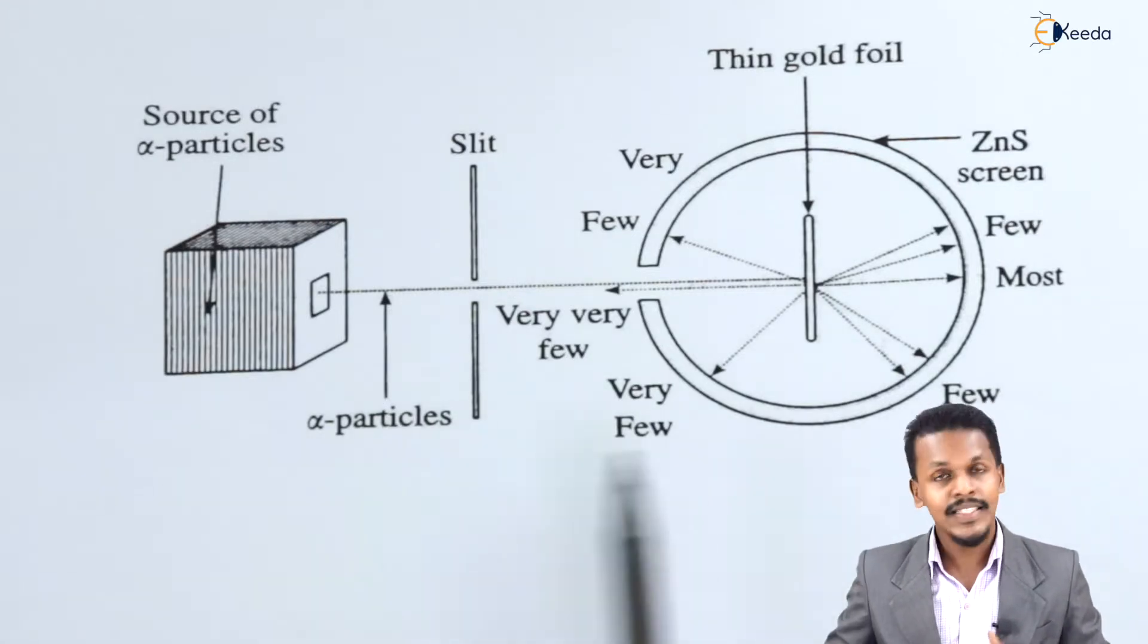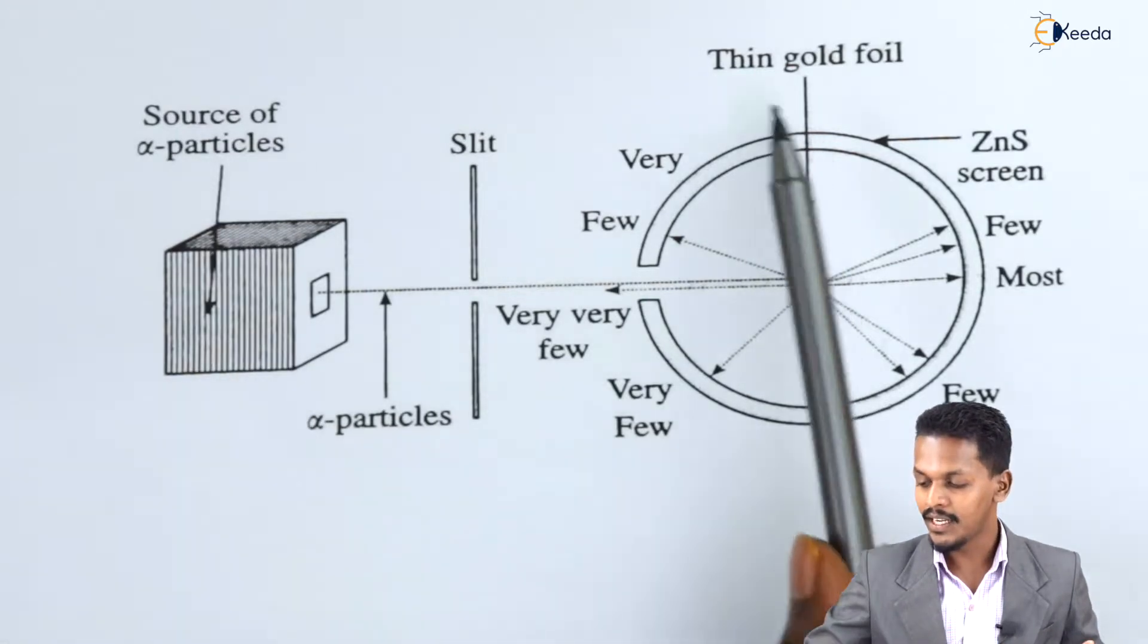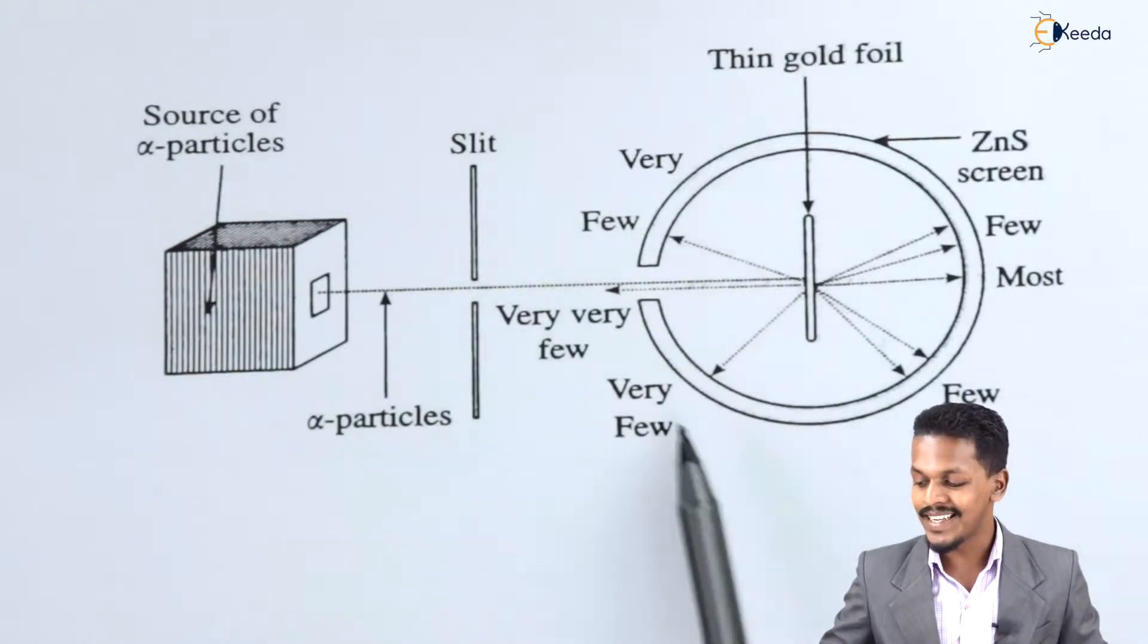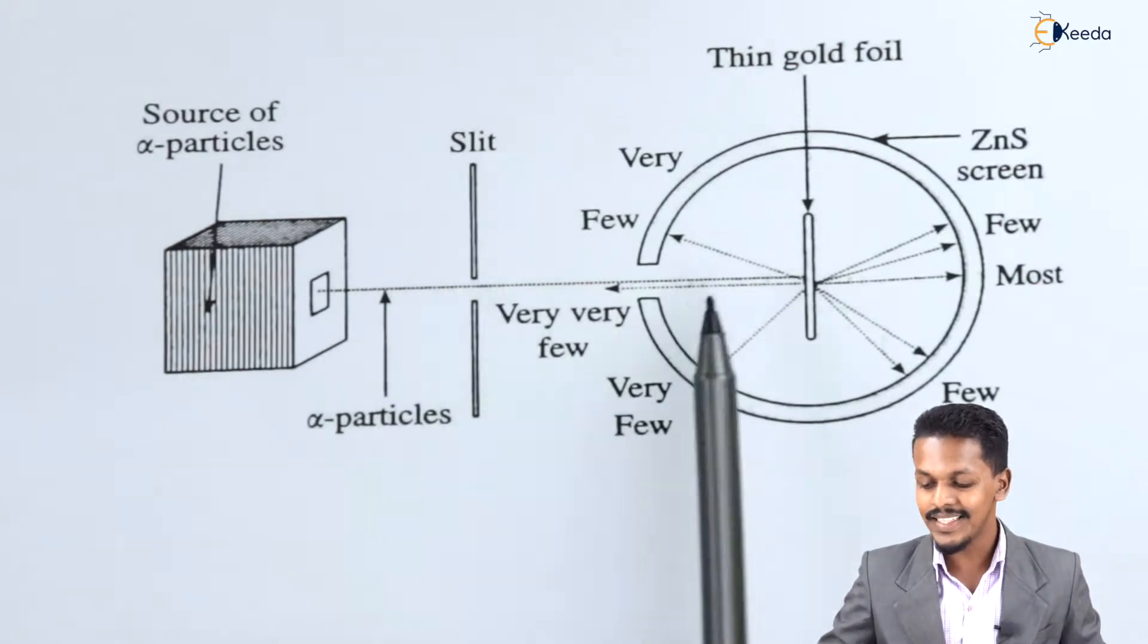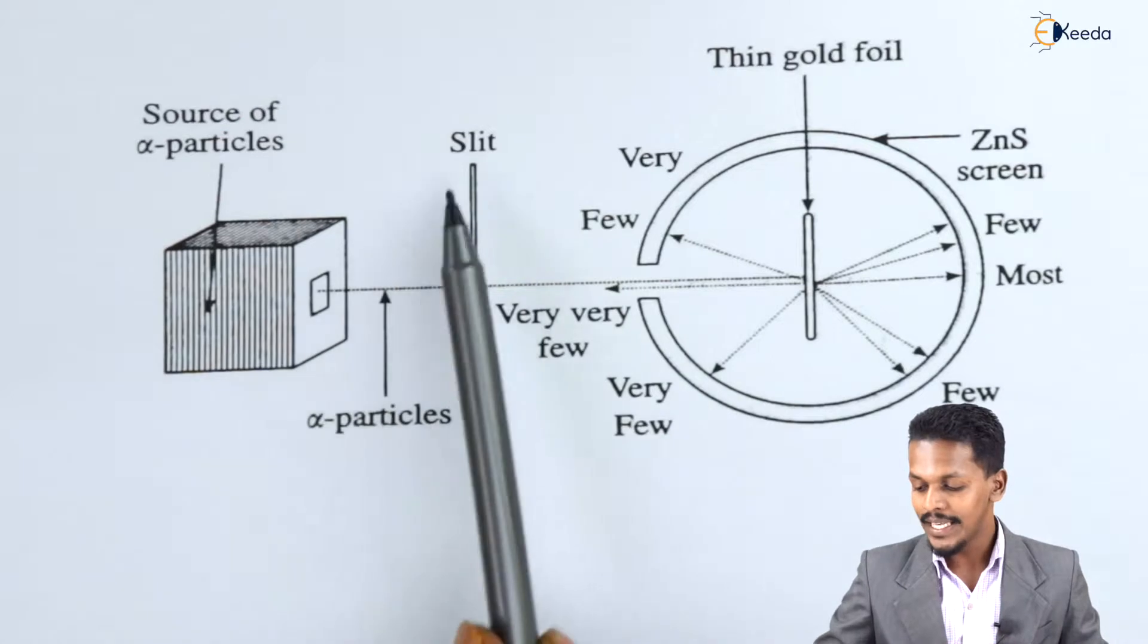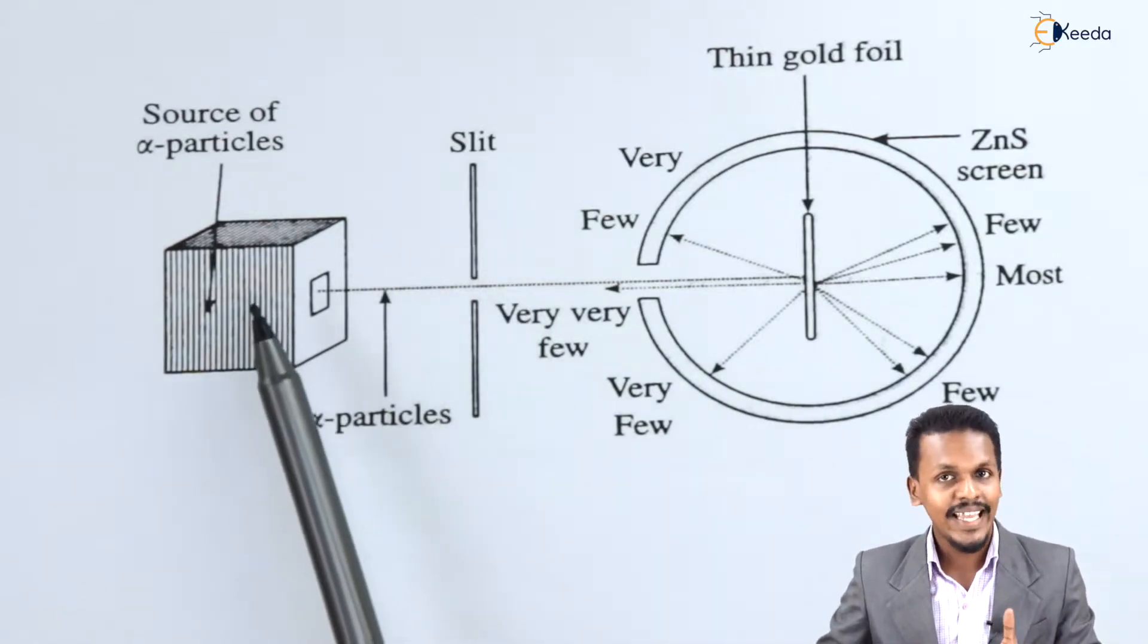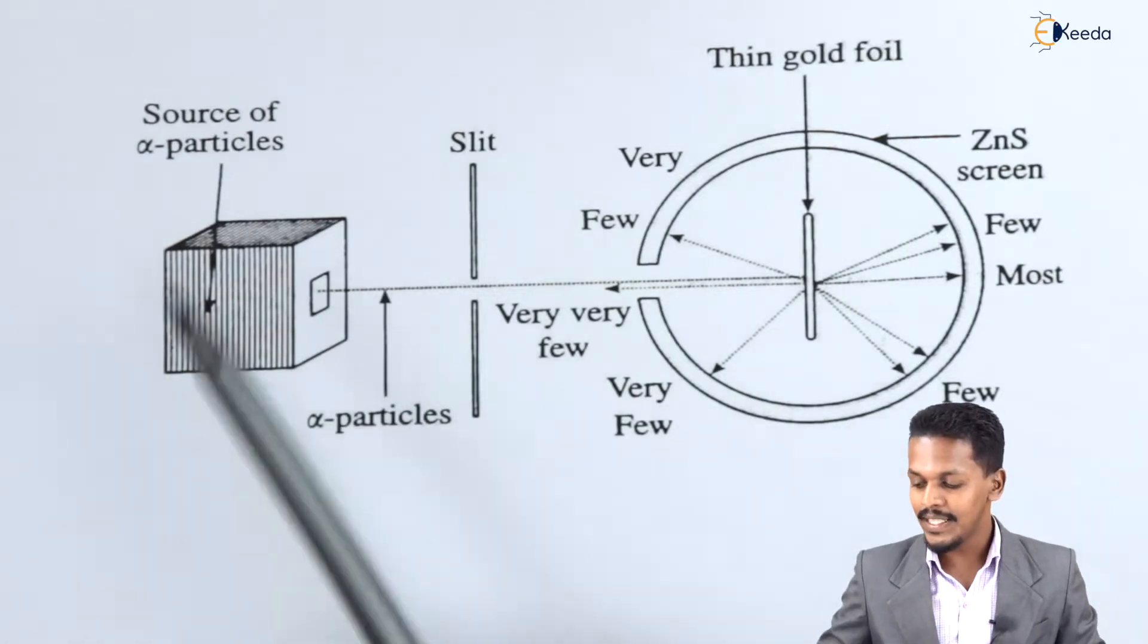This experiment consists of a source of alpha particles, a thin gold foil of 100 nanometer thickness, which is covered with a ZnS screen. There is also a slit present between the source of alpha particles and the gold foil, which controls the intensity of the alpha particles that will penetrate through. This is the particular arrangement.